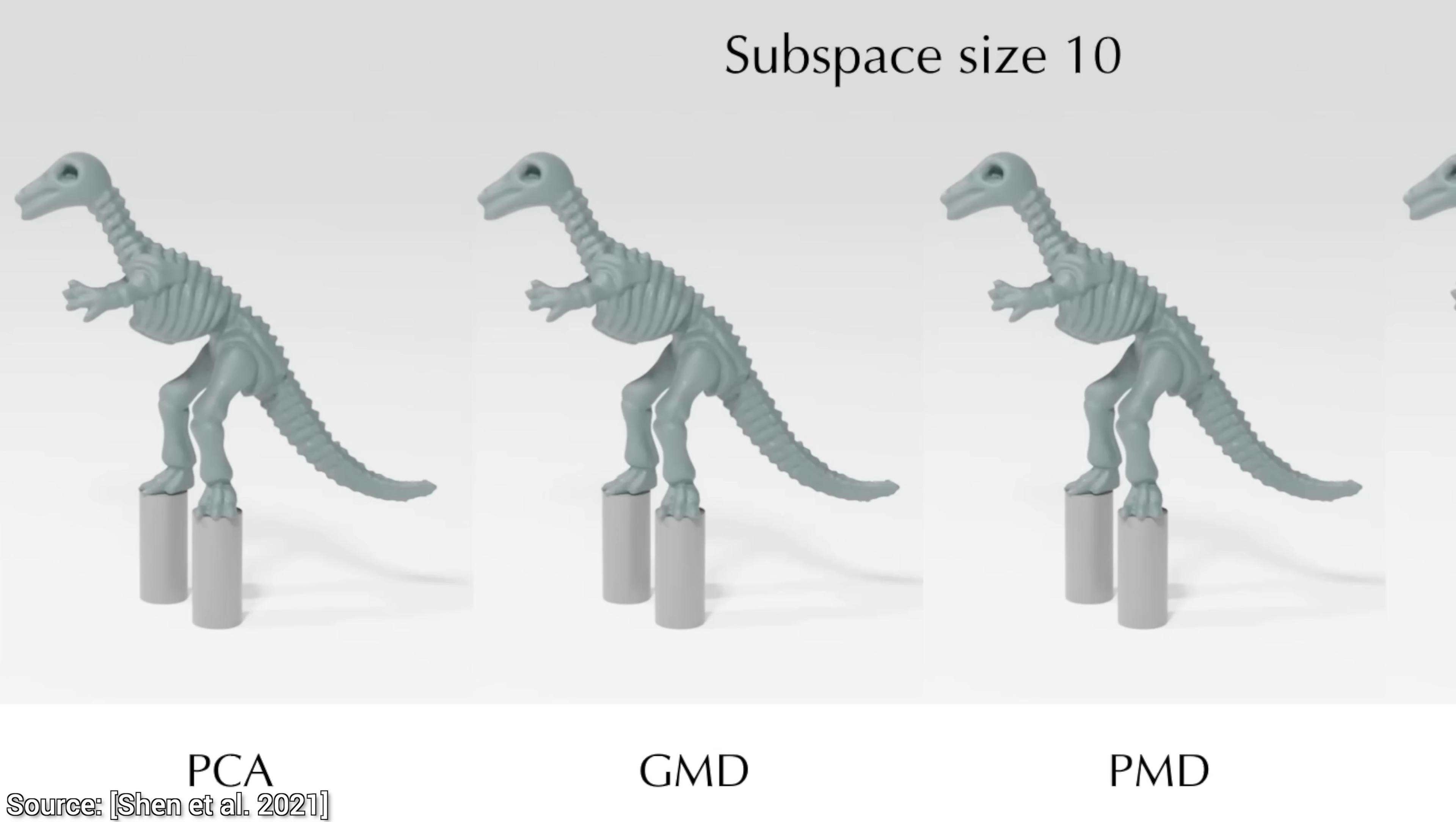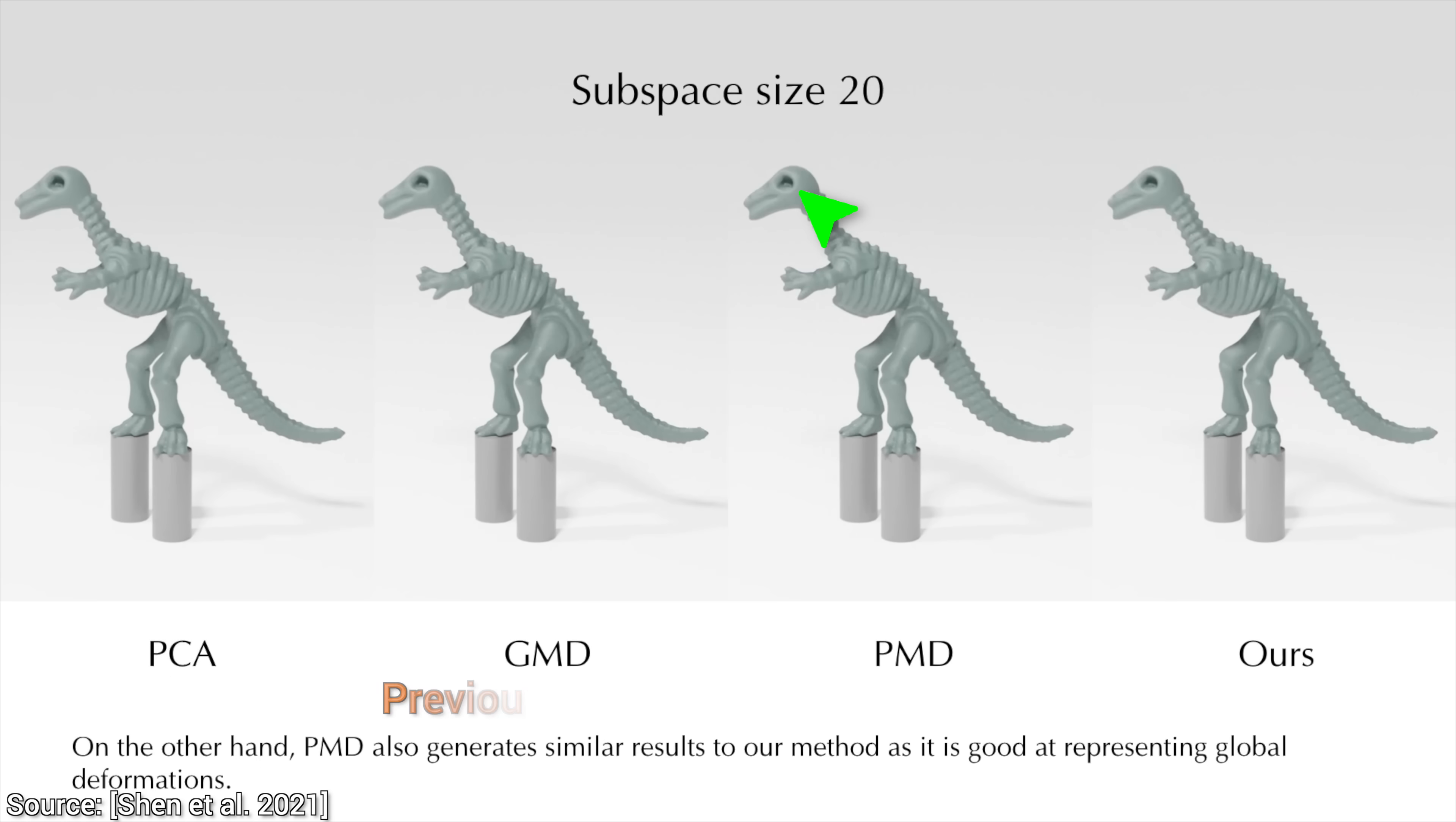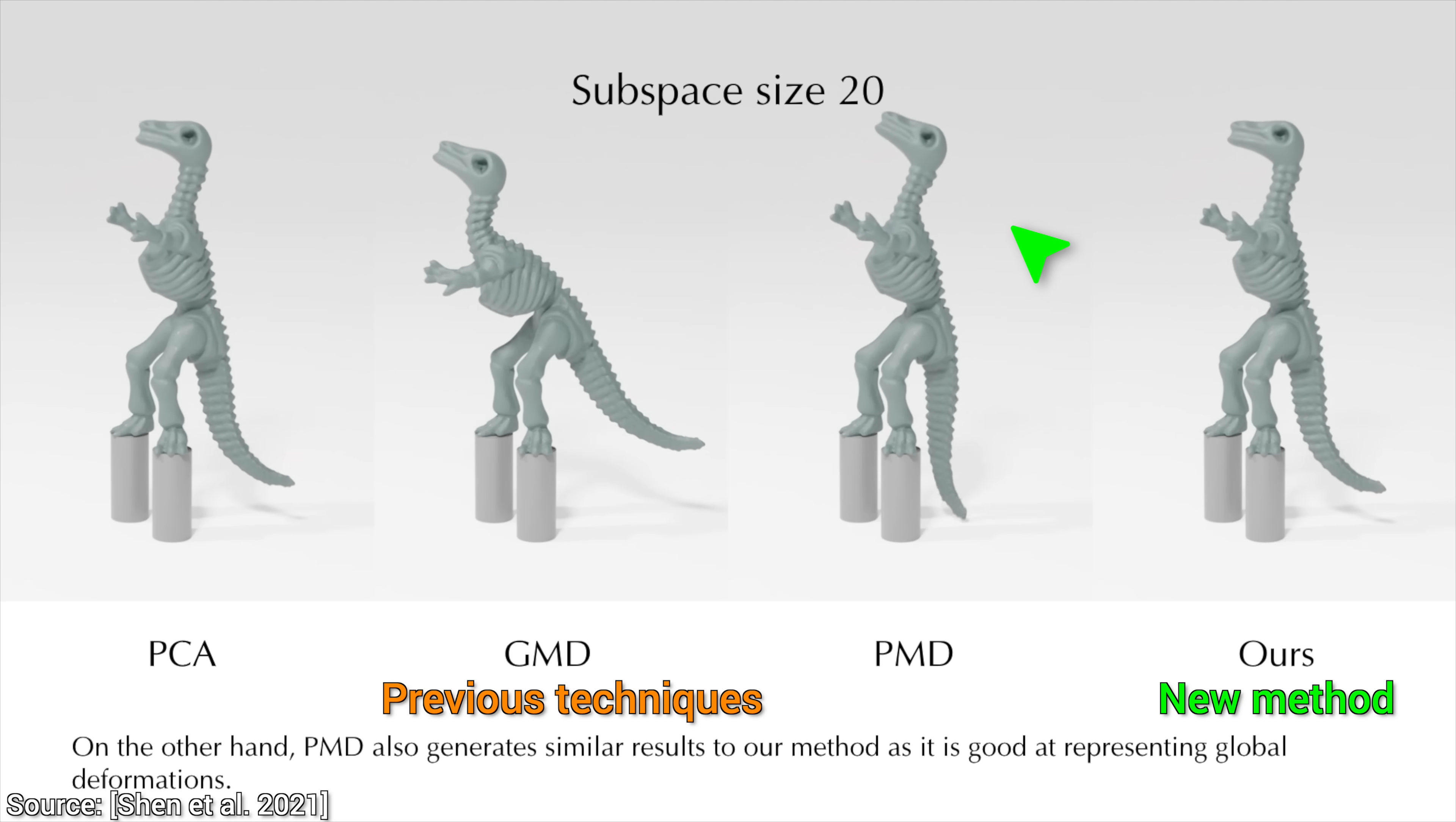Now, let's see how the previous methods were able to deal with this challenging simulation. When simulating a system of a smaller size, well, none of these are too promising. When we crank up the simulation domain size, the physical model derivative, PMD in short, does pretty well.